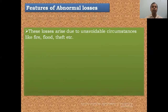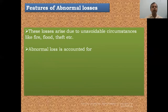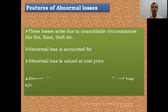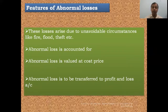In the case of abnormal losses, there are some features: these losses arise due to unavoidable circumstances like fire, flood, and theft. Abnormal loss is accounted for in the books of account. Abnormal loss is valued at cost price, and the loss is transferred to profit and loss account. These losses arise due to unexpected circumstances.